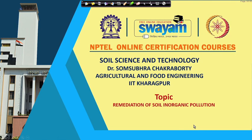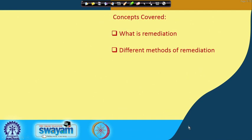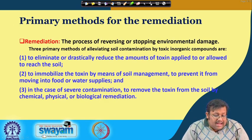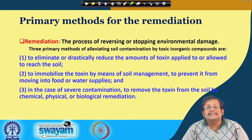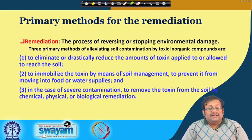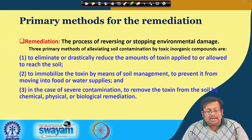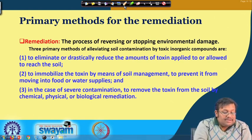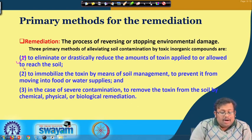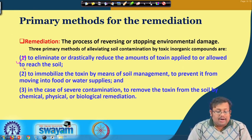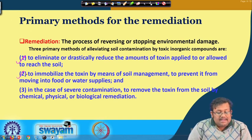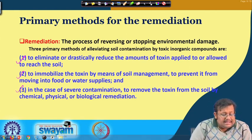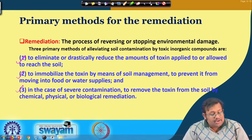Now we move to a new topic: remediation of soil inorganic pollution. Remediation is defined as a process of reversing or stopping environmental damage. There are three primary methods for alleviating soil contamination by toxic inorganic compounds. First, eliminate or drastically reduce the amount of toxin applied or allowed to reach the soil. Second, immobilize the toxin by means of soil management to prevent it from moving into food or water supplies. Third, in the case of severe contamination, remove the toxin from the soil by chemical, physical, or biological methods.